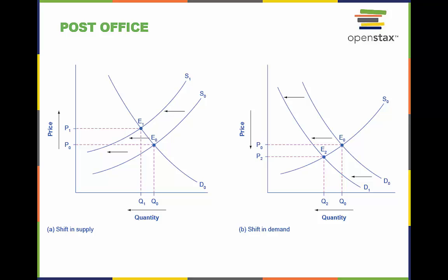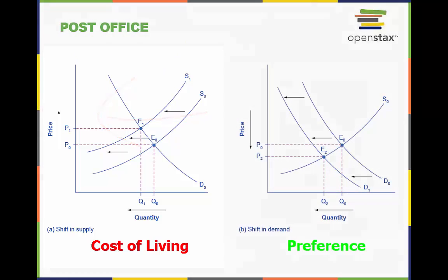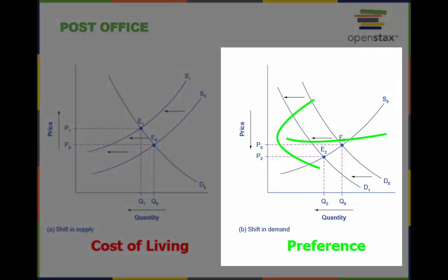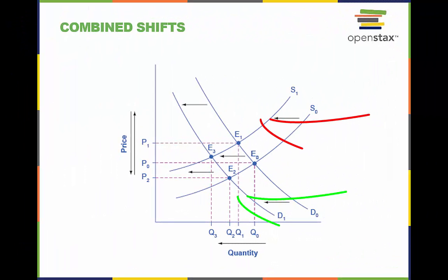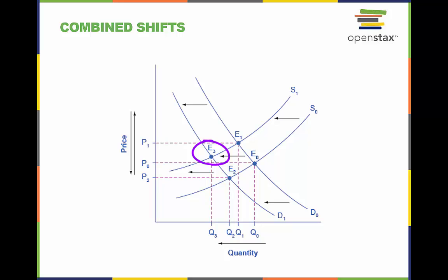Here we can see two forces working at the same time, shifting the supply of U.S. Post Office services and the demand for those services. A cost of living increase is the force shifting the supply from S-O to S-1. And a change in the preference of consumers for email instead of traditional mail is shifting the demand curve from D-O to D-1. As we combine the shift in supply and the shift in demand together in the same graph, we can see how the equilibrium price and quantity change from E-O, the original equilibrium, to E-1 and E-2, representing the equilibrium shifts to supply and demand respectively, and then finally E-3, representing the new equilibrium resulting from the combined shifts.